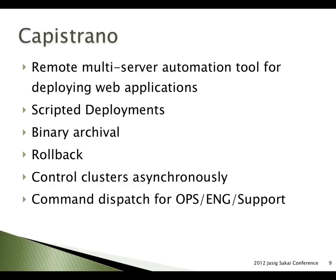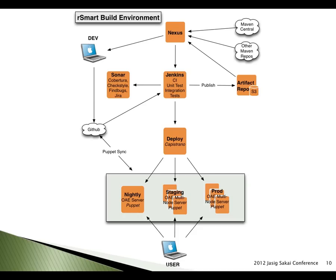Capistrano also gives you the ability to control clusters asynchronously. If you want to run one command across a bunch of machines you don't have to go into each one — just execute any command or task against multiple machines. For a cluster with two-plus app servers, if you want to confirm consistent versions, you can just run 'cap production version' and it will go get the version from all those machines. It also acts as a command dispatch for ops and engineering support groups, so routine tasks like collecting logs can be codified as Capistrano tasks rather than maintained as manual runbooks.